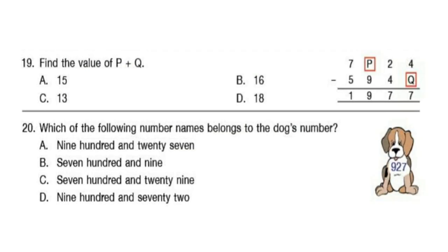Question 19. Find the value of P plus Q. You can pause the video to calculate your answer. Here P works out to 9 and Q works out to 7, so P plus Q is option B: 16.